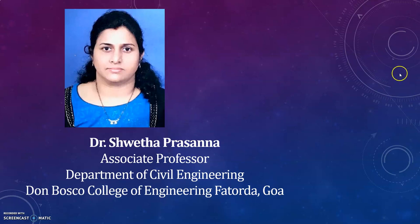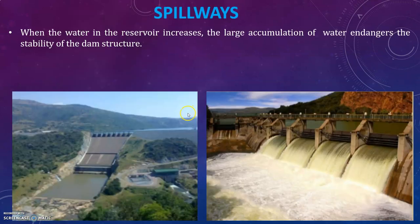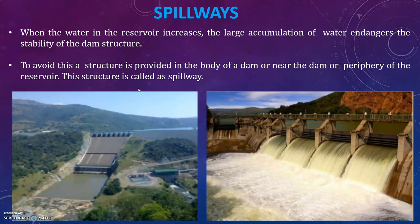Hello, dear students. Today I will be discussing spillways — what is a spillway, what are the different types of spillways, and what are the requirements of spillways. When the water in the reservoir increases, the large accumulation of water endangers the stability of the dam structure. To avoid this, a structure is provided in the body of a dam, or near the dam, or at the periphery of the reservoir. This structure is called a spillway.